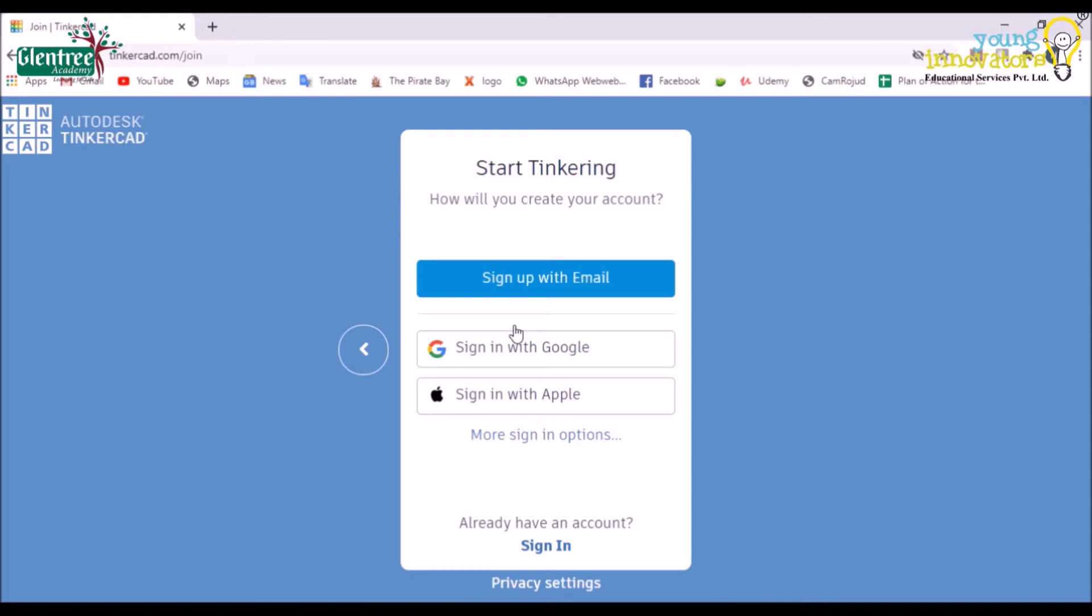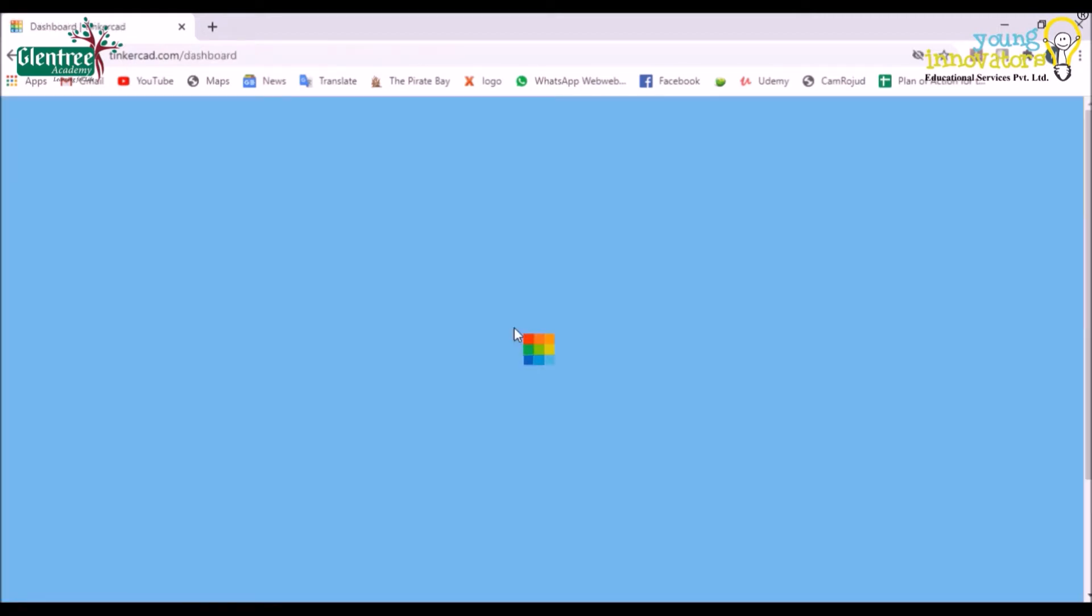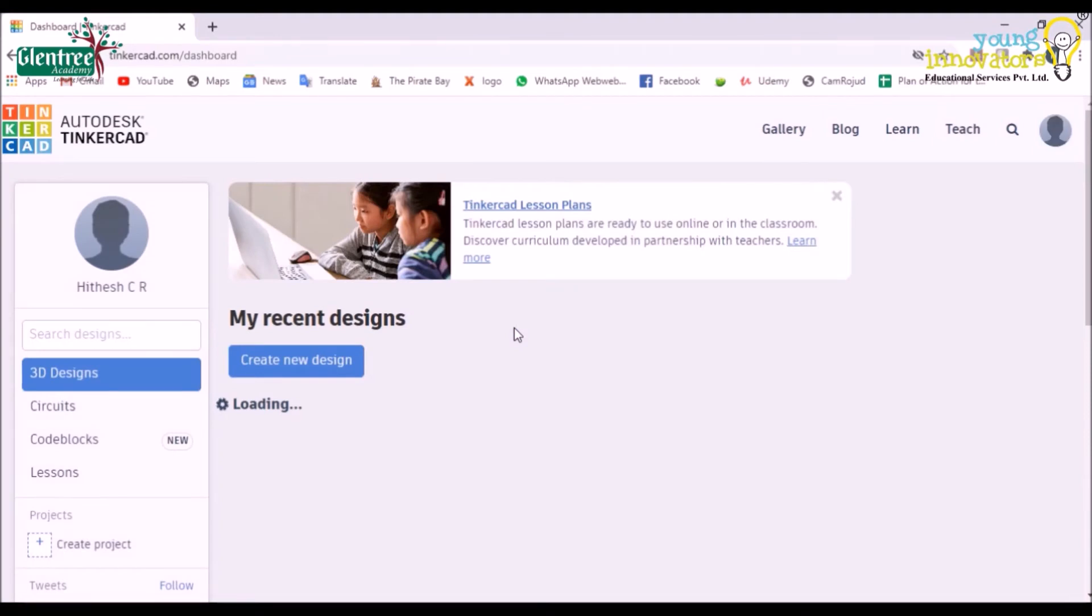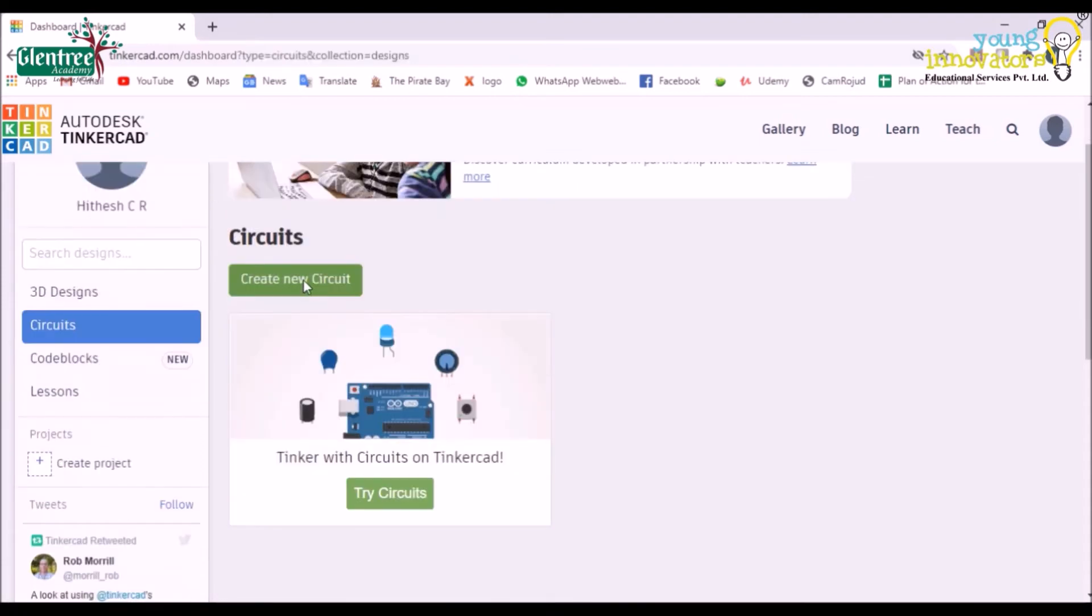Create your personal account, click on 'Sign in with Google' option. Once done, it will directly land me to the Tinkercad main sheet. The main sheet displays a few options on the left side like 3D designs, circuits, code blocks, and lessons. Choose the required one and click on it. We shall choose circuit as we will be working on electronic circuits and its simulations.